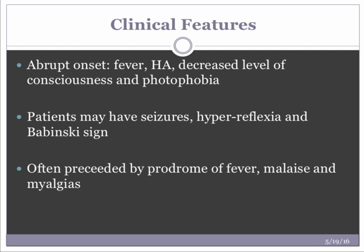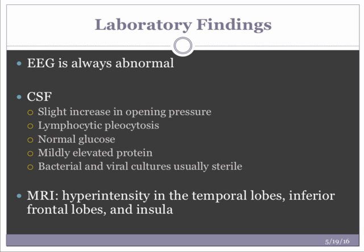Common features of encephalitis include seizures — either focal or generalized — hyperreflexia, positive Babinski sign, and occasionally focal neurologic signs like hemiparesis, aphasia, ataxia, limb tremors, and cortical blindness. Often there is a prodromal illness characterized by fever, malaise, and myalgias. The primary difference between encephalitis and meningitis is that encephalitis patients develop prominent mental status changes and minimal or absent stiff neck. The EEG is always abnormal.